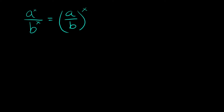What is this telling us? If you have two different numbers — two different bases — and they have the same exponent, we can just divide the numbers themselves, simplify, and then raise the result to that same exponent.